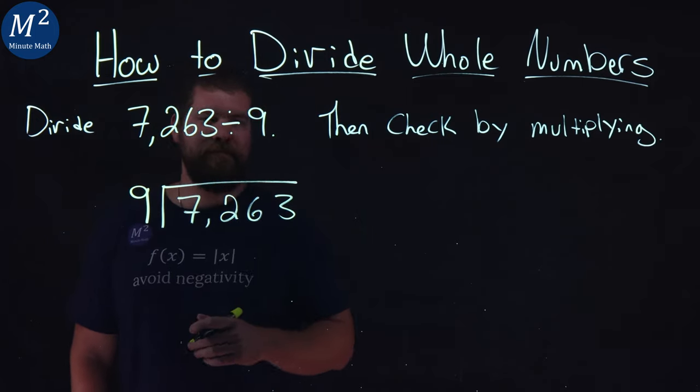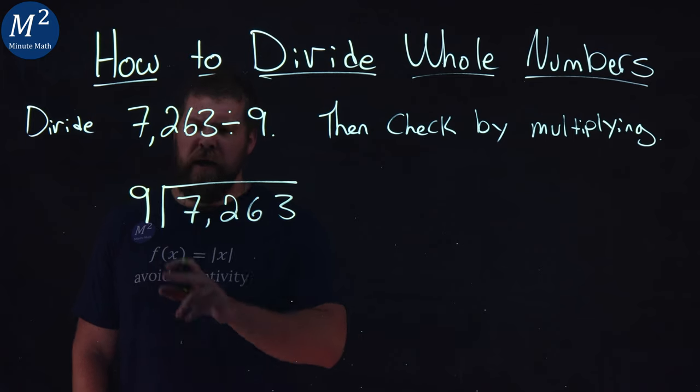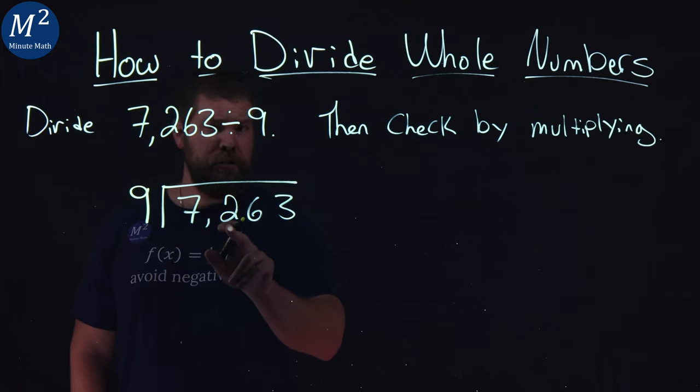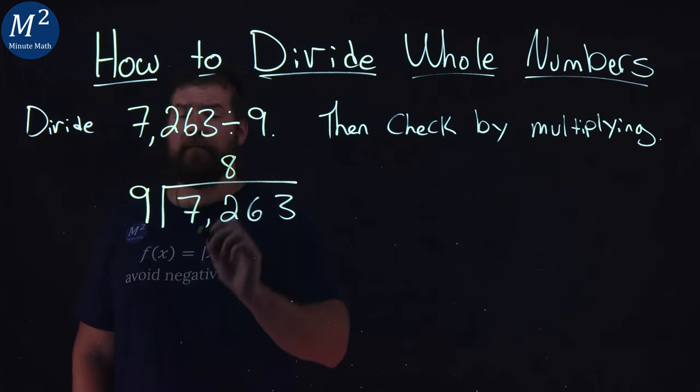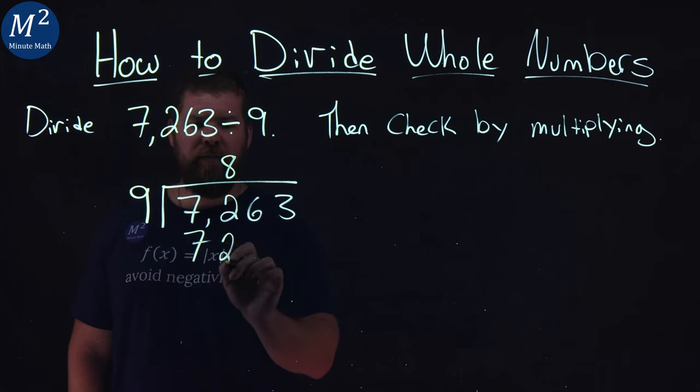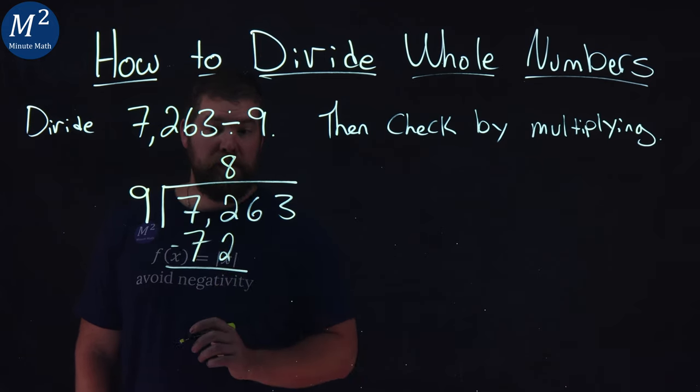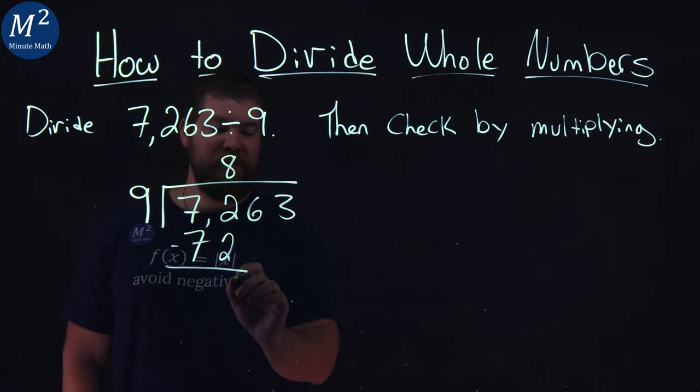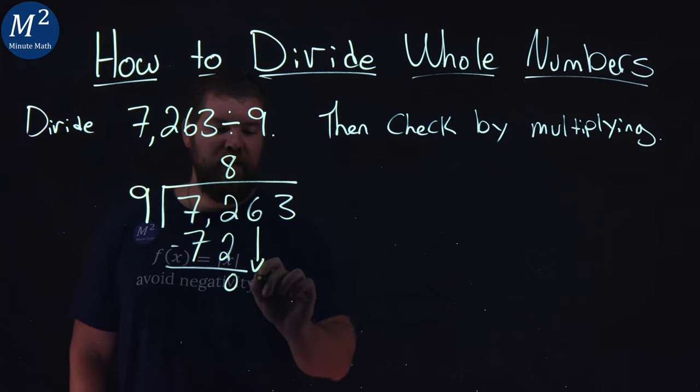Does 9 go into 7? Well, no. But 9 goes into 72. That's 8 times exactly. 8 times 9 is 72 and I subtract the two numbers. 72 minus 72 is 0. Bring down the 6.